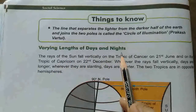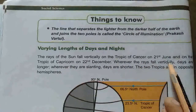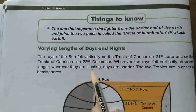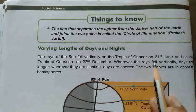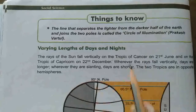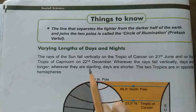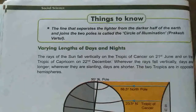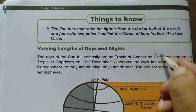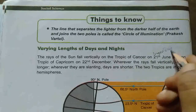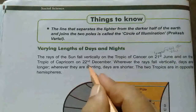Varying length of days and nights. The rays of the sun fall vertically on the Tropic of Cancer on 21st June and on the Tropic of Capricorn on 22nd December. Here we have the changing of the season. On 21st June, that is the longest day of the year, and 22nd December is the shortest day of the year.